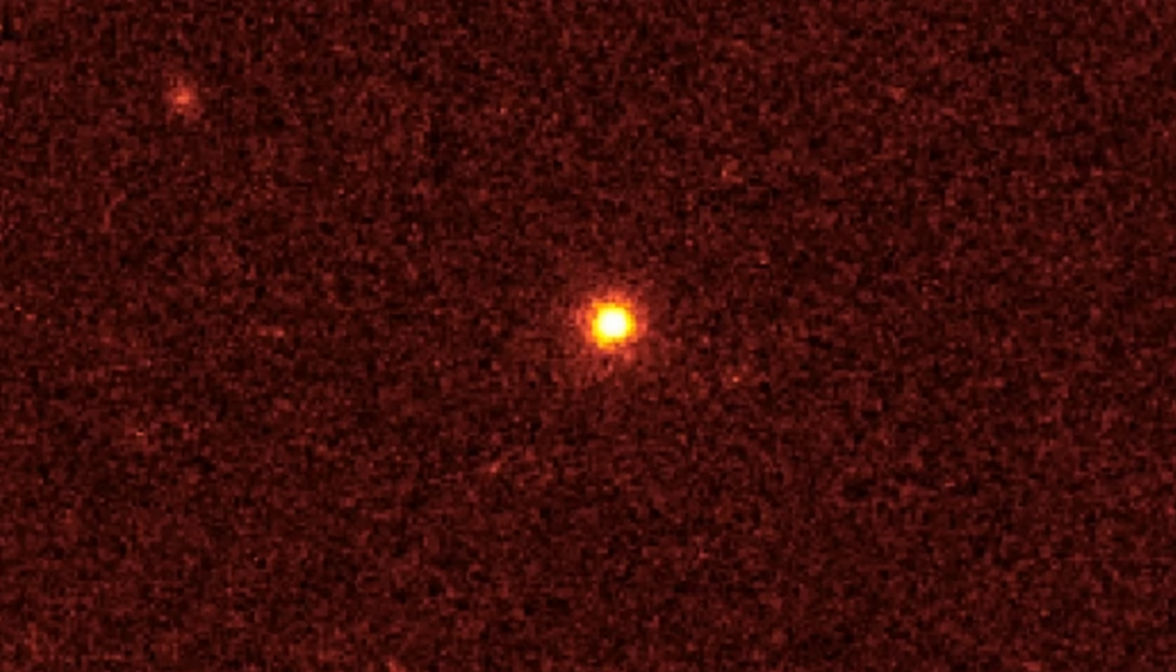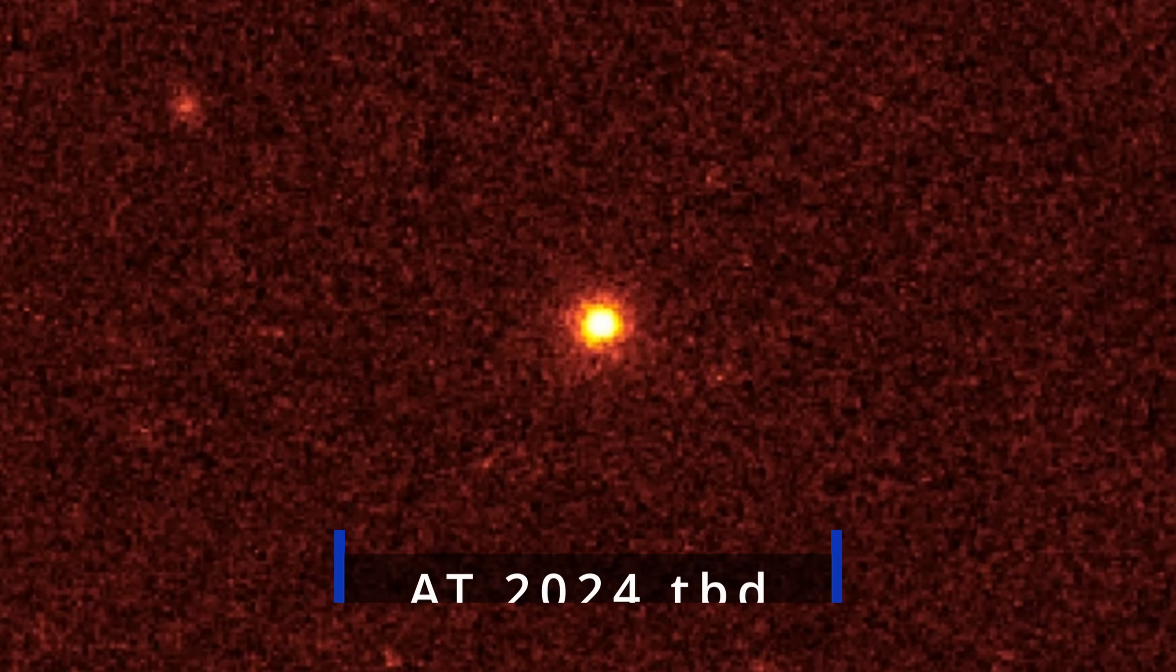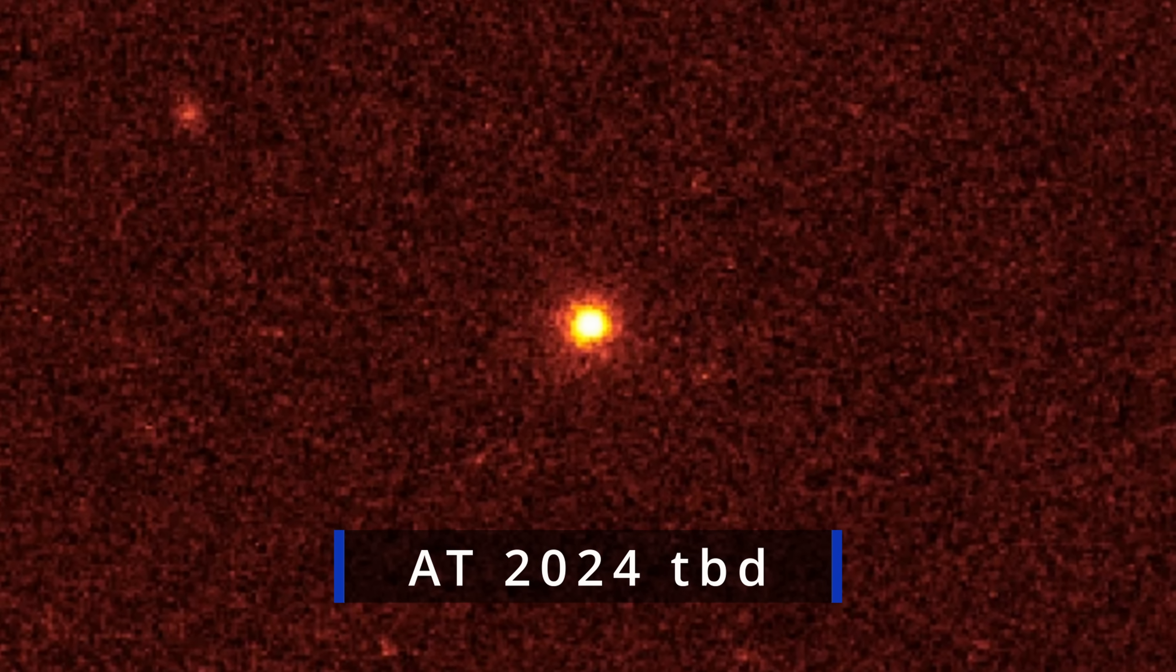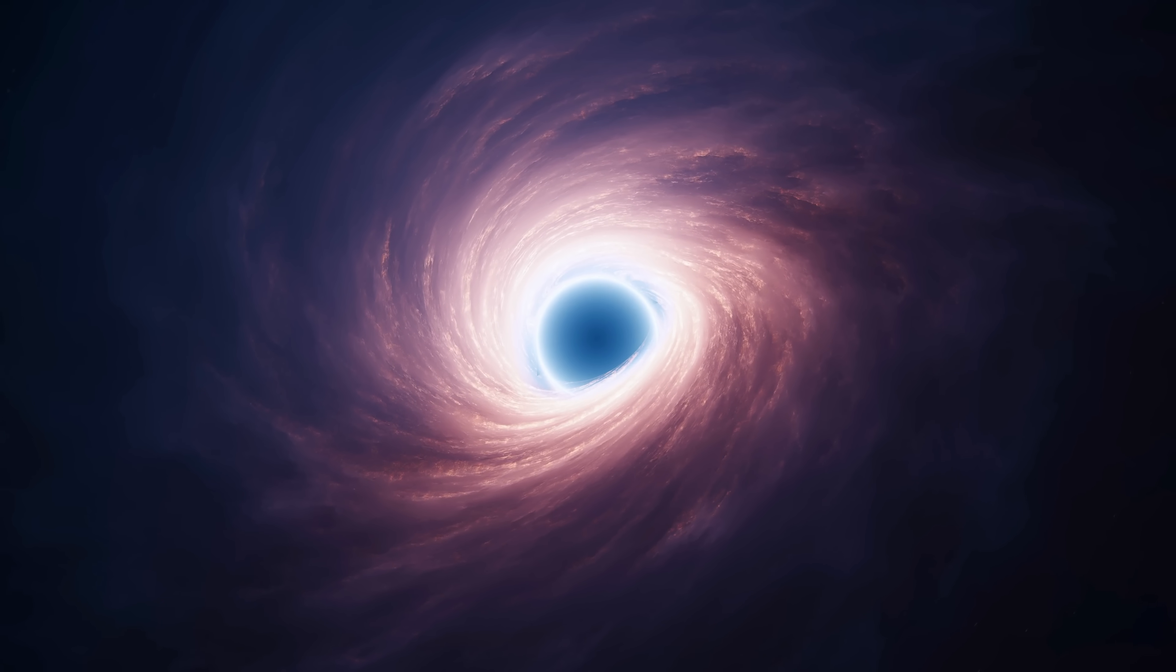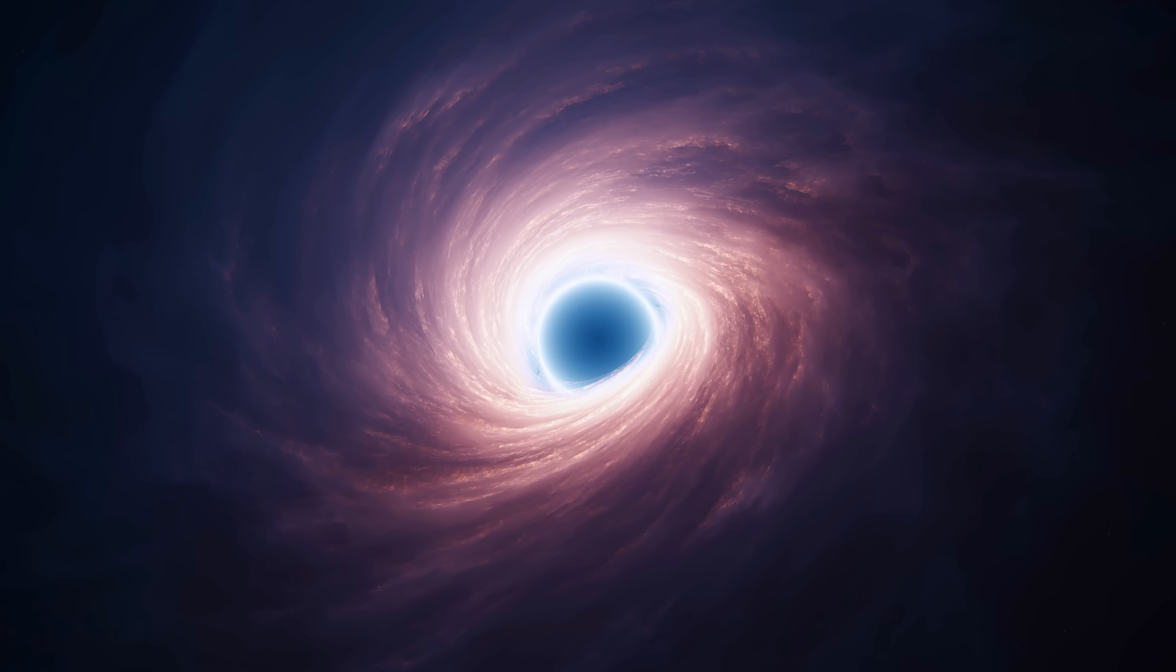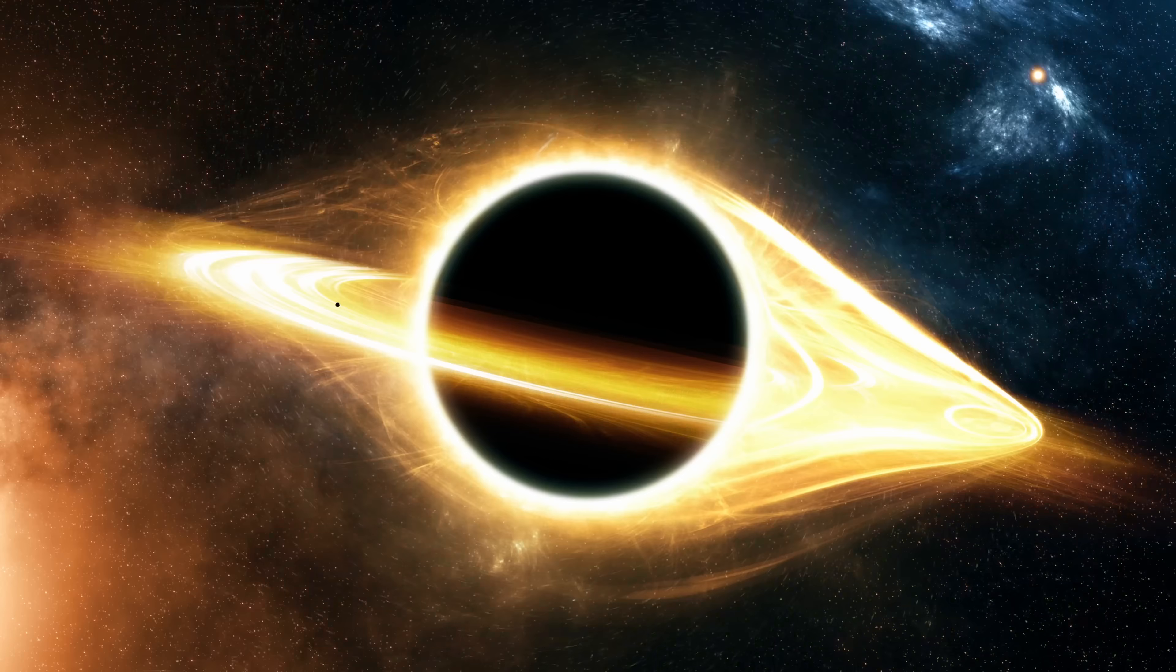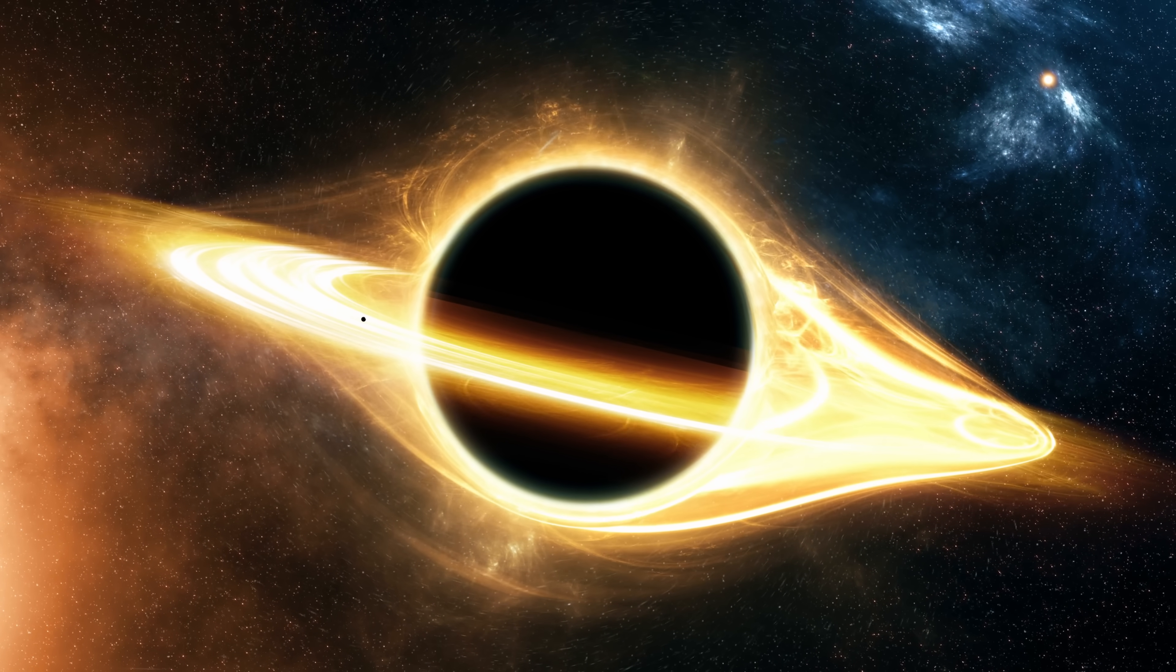And while one such event happened just a few months ago in 2024, this was known as AT-2024 TVD. And the initial observations once again reported a spaghettification of a star. Here the emissions resembled a formation of the accretion disk and the emissions coming from a relatively massive black hole.